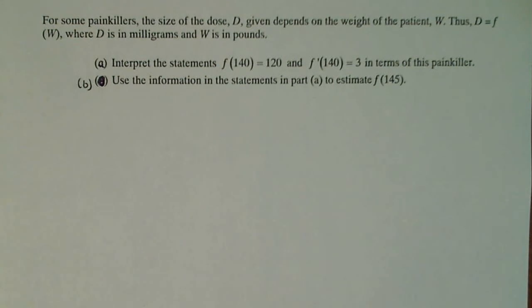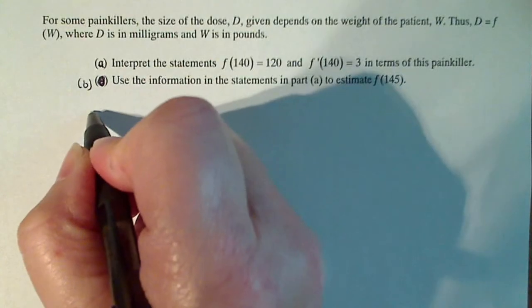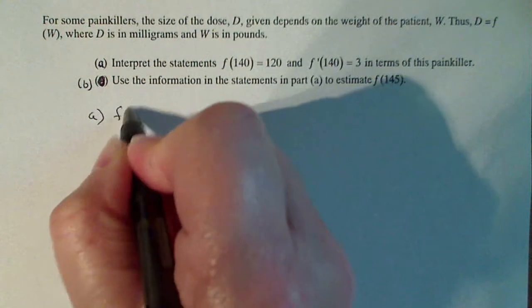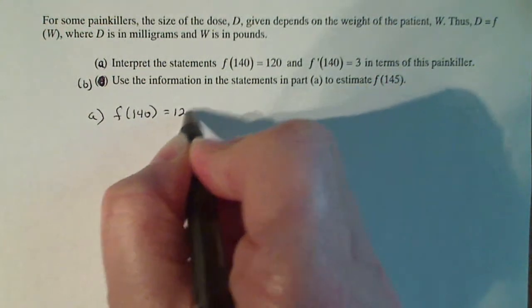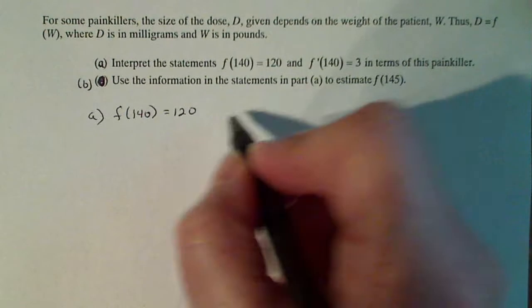So we need to interpret the statements F(140) = 120 and F'(140) = 3 in terms of this painkiller. So if I think of what F(140) means, I have to think about what each of these units of measure are.